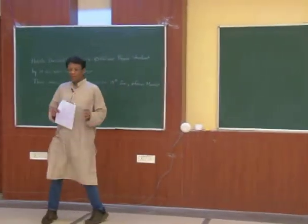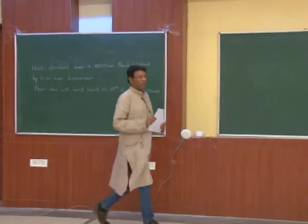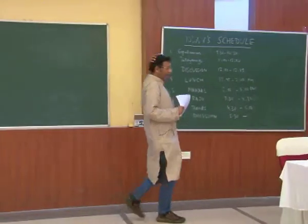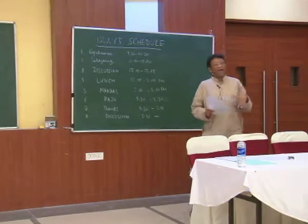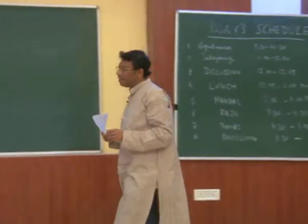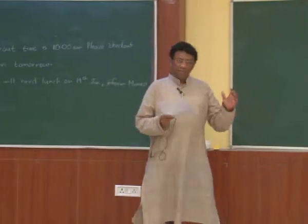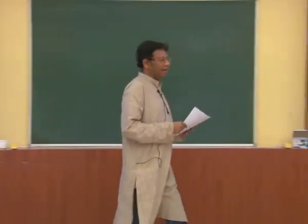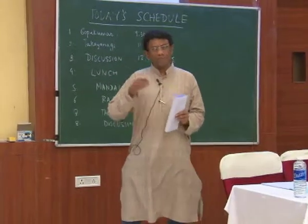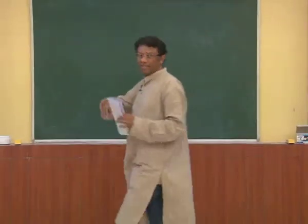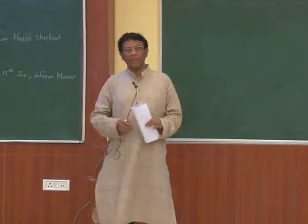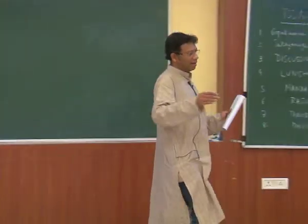In the last couple of lectures we focused on higher spin theories, and in particular described in ADS3 how you can have fairly simple theories involving gauge fields of spin higher than 2. In particular, you can have theories going all the way up to some maximal spin N, with spins from 2 up to N, and these are described by a Chern-Simons theory based on SL(N,R) times SL(N,R) gauge group.